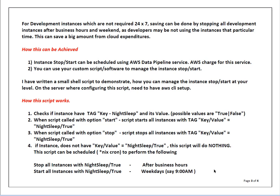My script checks tags on EC2 instances. I have selected the key name 'night-sleep' and its value can be either true or false. When the value is true, my script will stop or start that particular server when called with start or stop options. The script accepts three options: start — to start instances which have night-sleep set to true; stop — to stop servers with night-sleep set to true; and if the night-sleep value is not there or is set to false, my script will not touch that server.